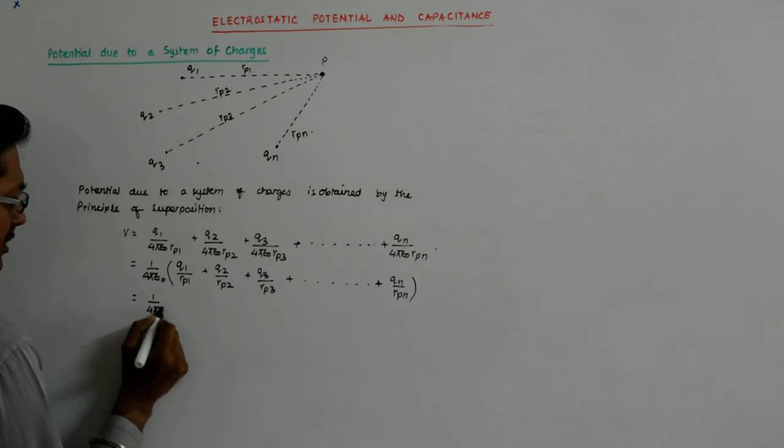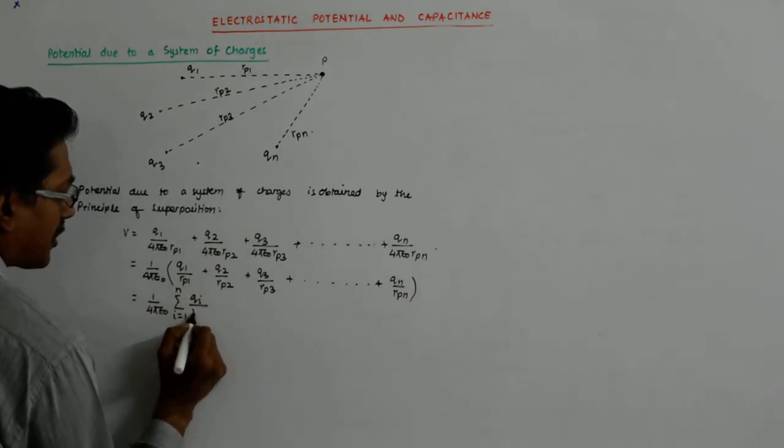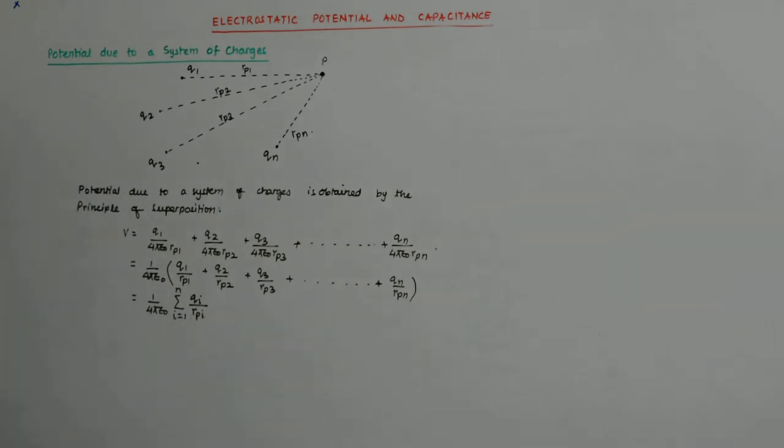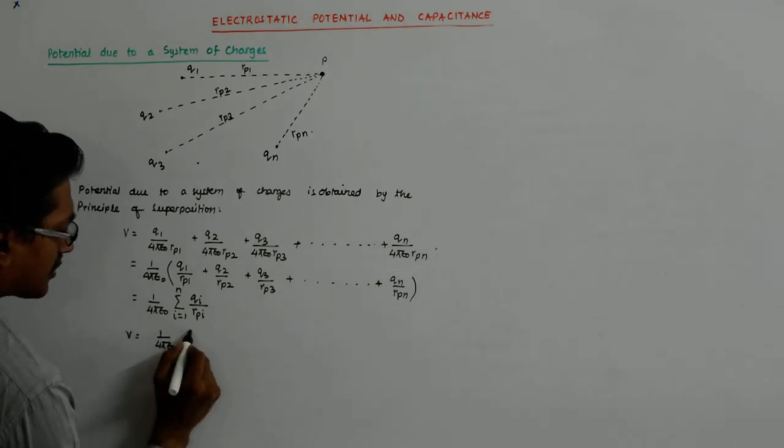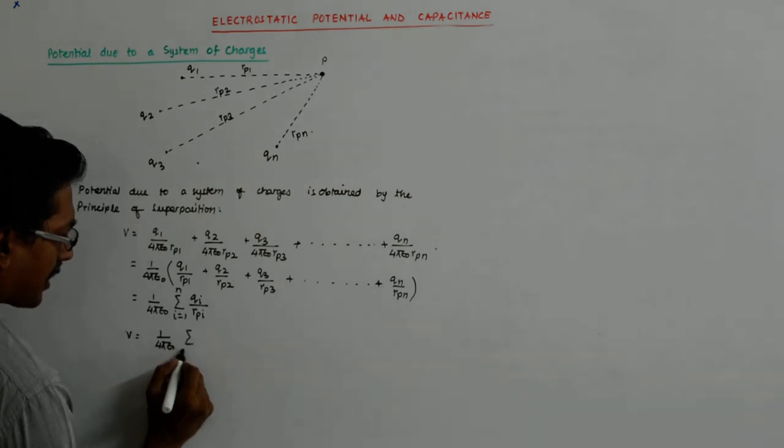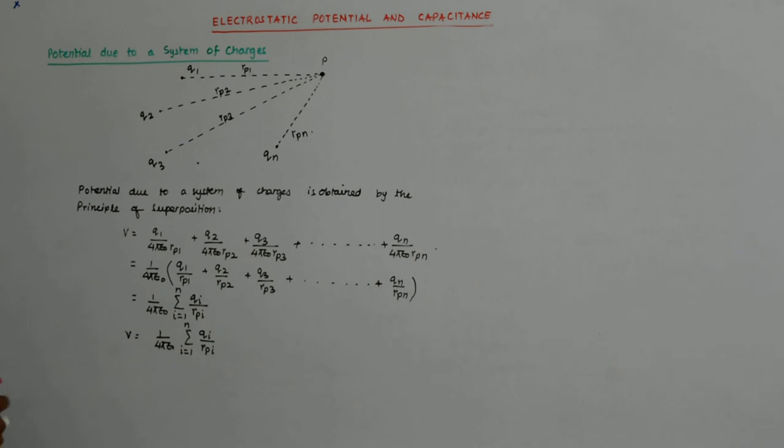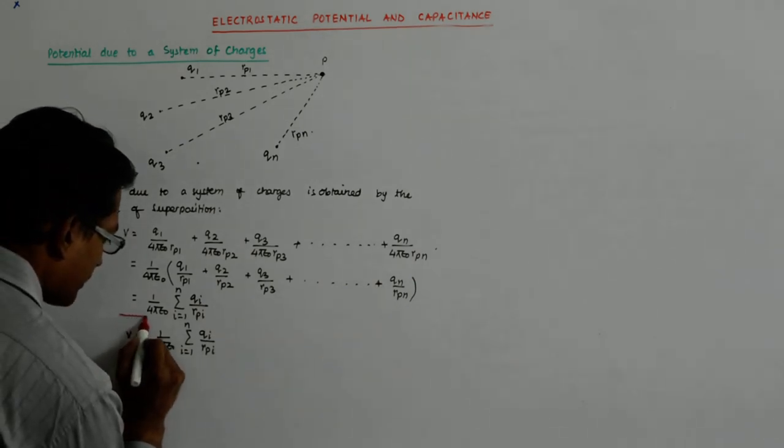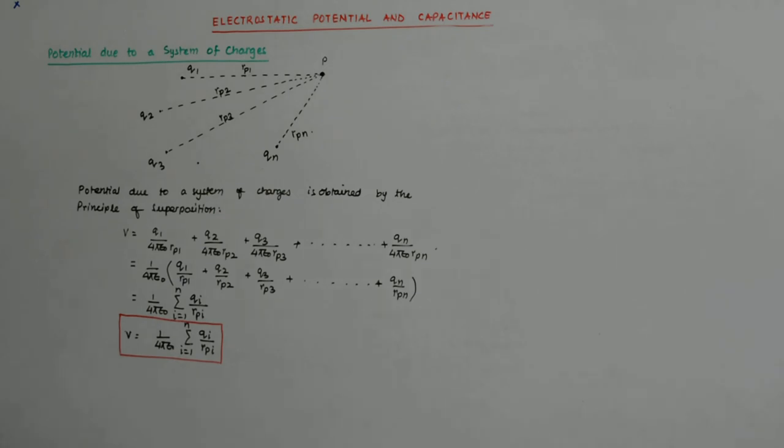If I use the sigma notation, it can be further shortened, and it becomes summation i equals 1 to n of qi upon Rpi. So V equals 1 upon 4πε₀ times summation i equals 1 to n of qi upon Rpi. This is your potential.